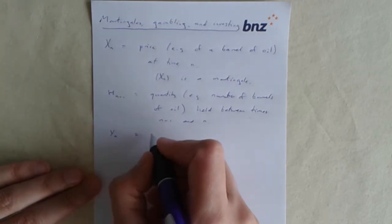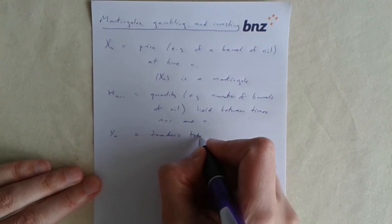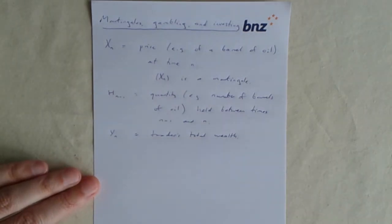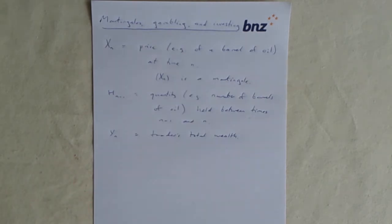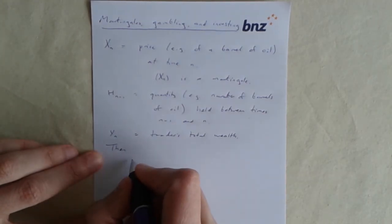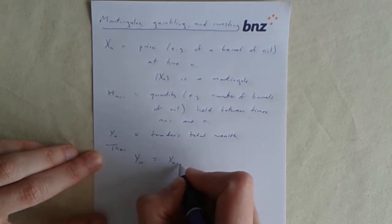So you have to think of some trader who's constantly buying and selling barrels of oil. That's what he does all the time. But since we're in discrete time, the only opportunities he has to buy and sell are at integer times. So in between n minus 1 and n, he's got some constant amount of barrels of oil that he's holding on to, perhaps to later sell.